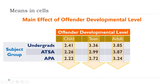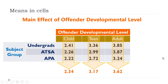To look at the main effect of offender developmental level on accountability ratings, you need to collapse across the other variable. You have to make the data look as if the only thing you have is those three levels — child, teen, and adult — collapsing across levels of the participant group. You get the weighted means, which we call marginal means because they're in the margins of the table.